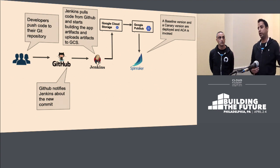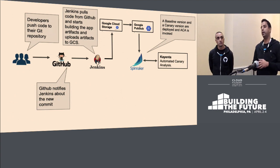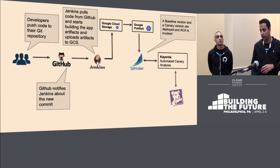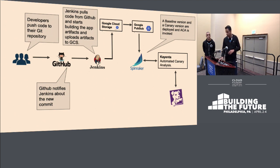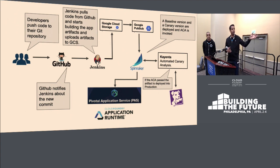The pipeline deploys a baseline version and a canary version. It calls Kayenta — an automated canary analysis tool built into Spinnaker — which uses an application monitoring tool. We used Datadog in this case; it also supports Prometheus, New Relic, and similar tools. Once automated canary analysis passes, Spinnaker deploys the app into Pivotal Application Service, which is based on Cloud Foundry application runtime.